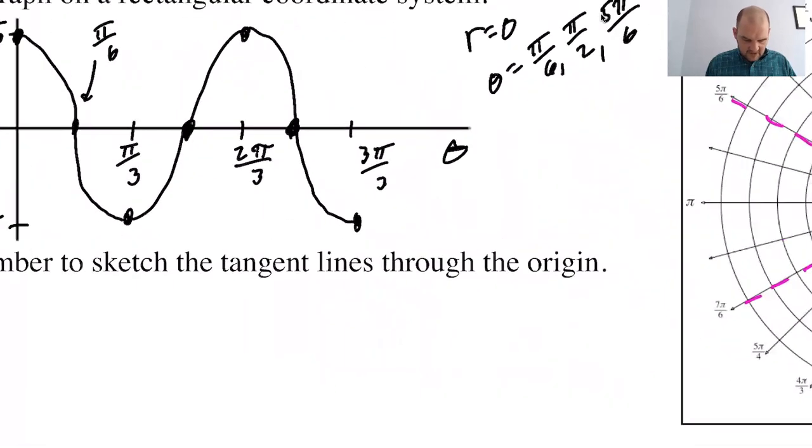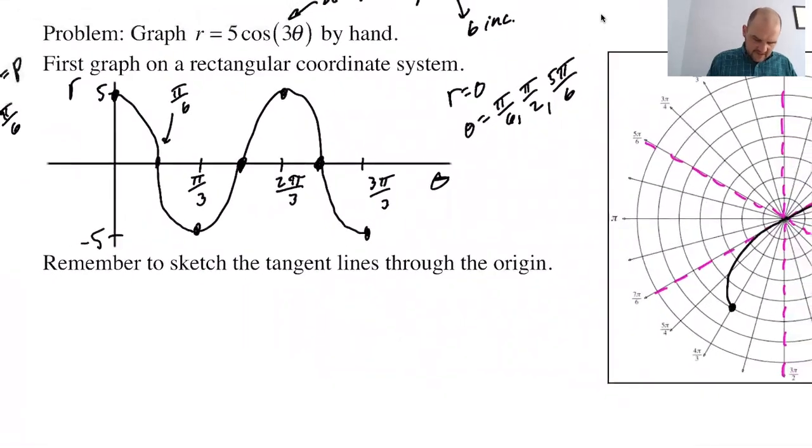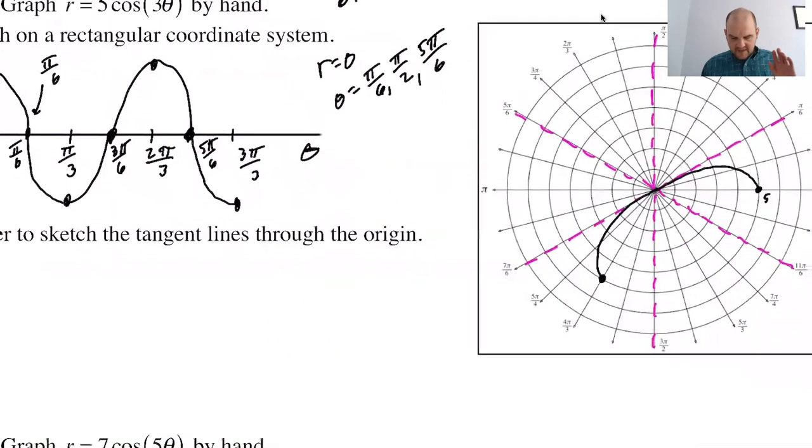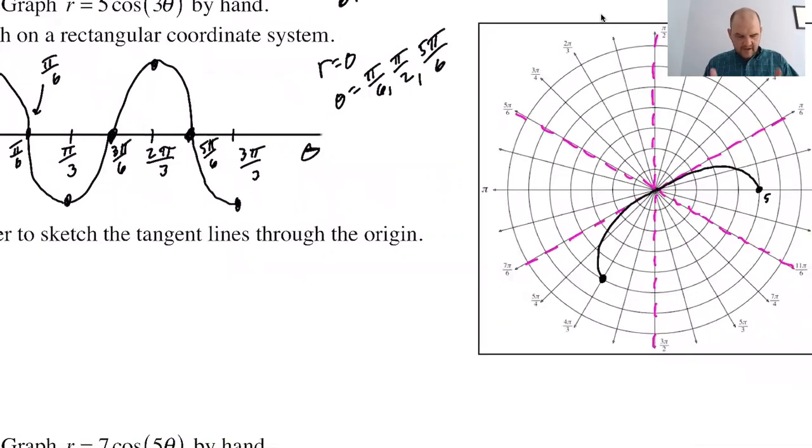By the time I get to, what is it? This is pi. I should have labeled more of these. Pi over 6, 2 pi over 6, 3 pi over 6, which is pi over 2, 4 pi over 6, 5 pi over 6. Okay. By the time I get to pi over 2, I need to be at 0 again. So let's do that.